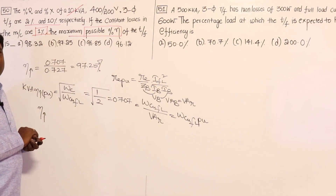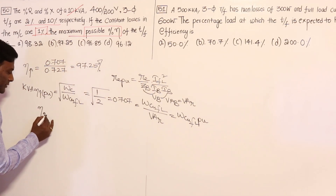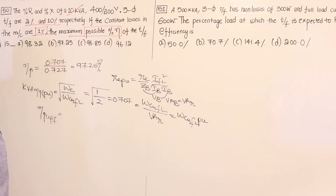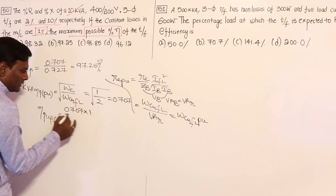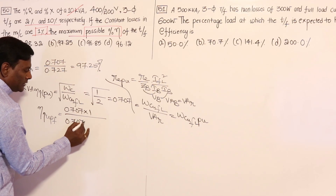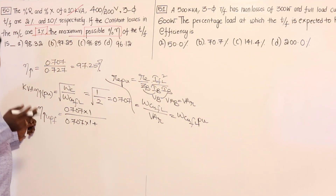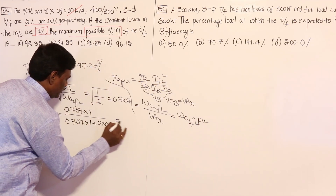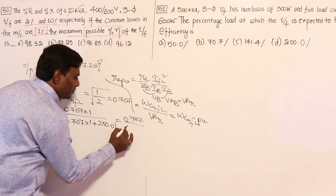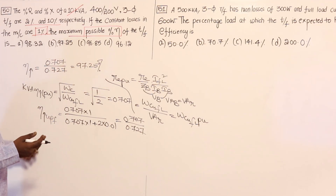Maximum efficiency occurs when core loss equals copper loss, and maximum possible efficiency is evaluated at unity power factor. So maximum efficiency equals output divided by output plus losses: 0.707 times unity power factor, divided by 0.707 times unity power factor plus two times core loss. Two times one percent equals 0.02, giving 0.707 divided by 0.727.